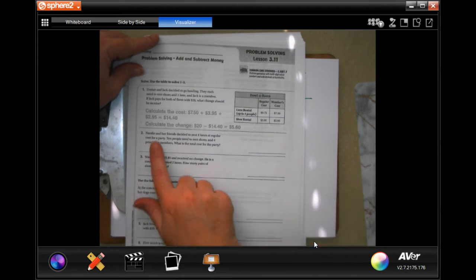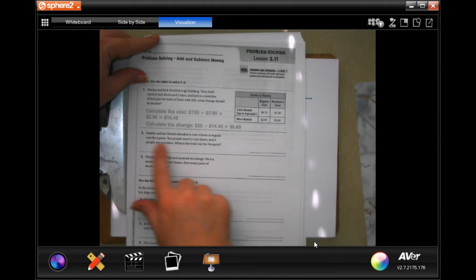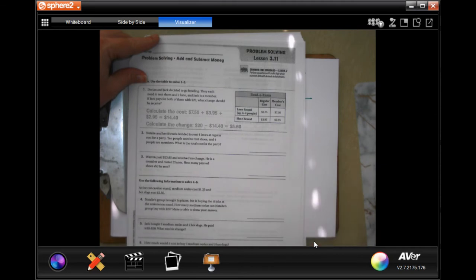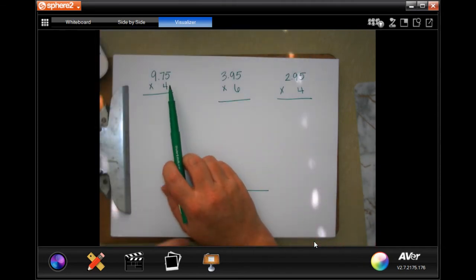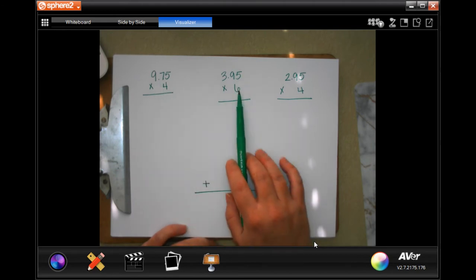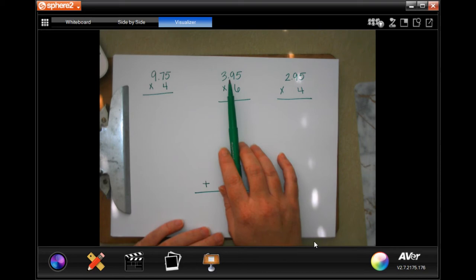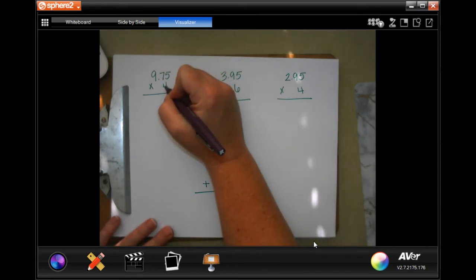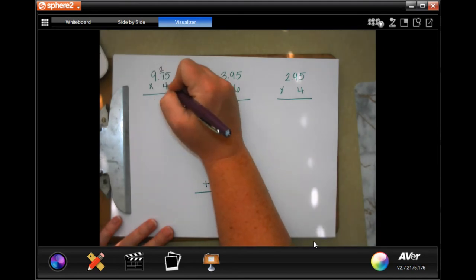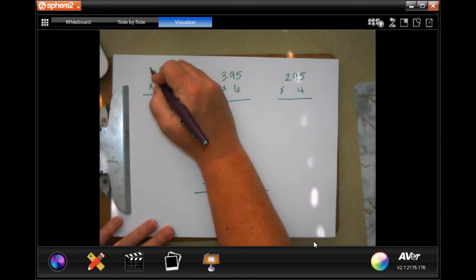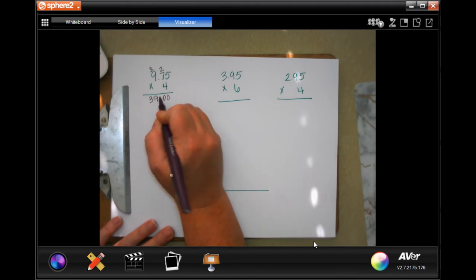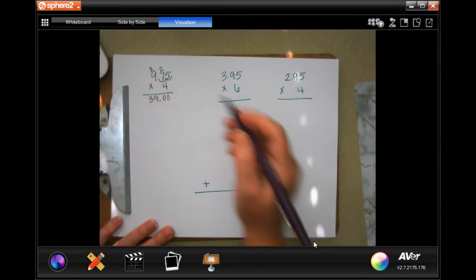So the first one that we need to do is number 2, and it says Natalie and her friends decided to rent 4 lanes at regular cost for a party. 10 people need to rent shoes, and 4 people are members. What's the total cost for the party? So I already wrote down there's 4 lanes at regular cost. First we're going to start out by multiplying. So 4 times 5 is 20, carry our 2. 4 times 7 is 28, plus 2 more is 30, carry our 3. 4 times 9 is 36, plus 3 more is 39. We're going to go in 1, 2 places, $39. That's our first one.